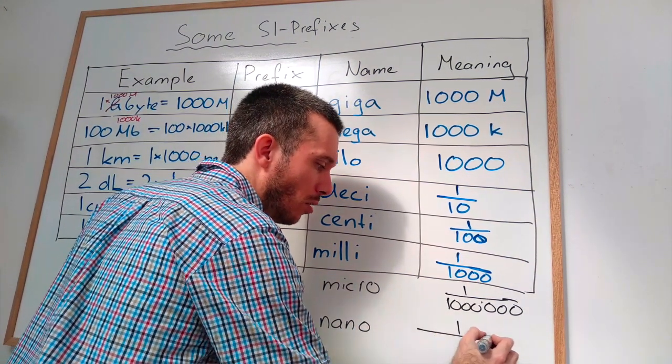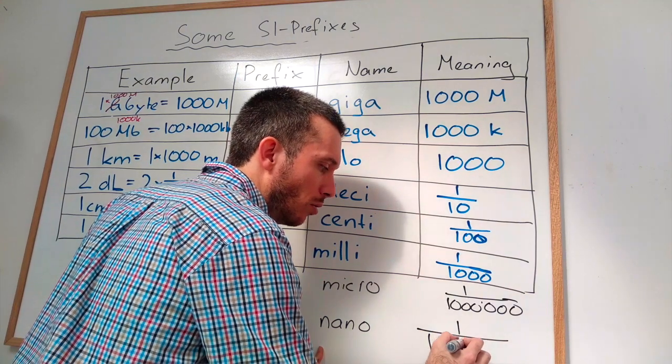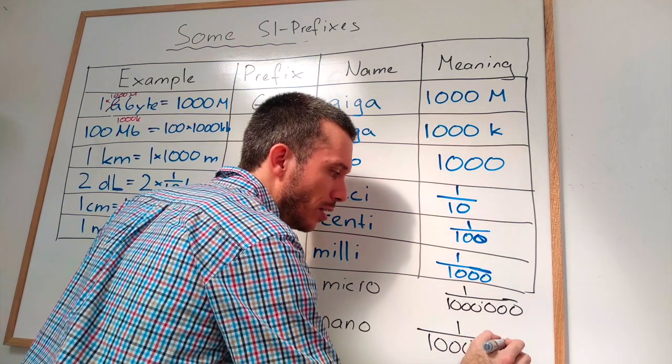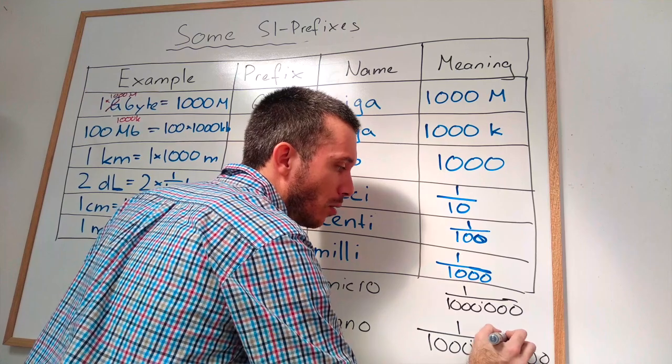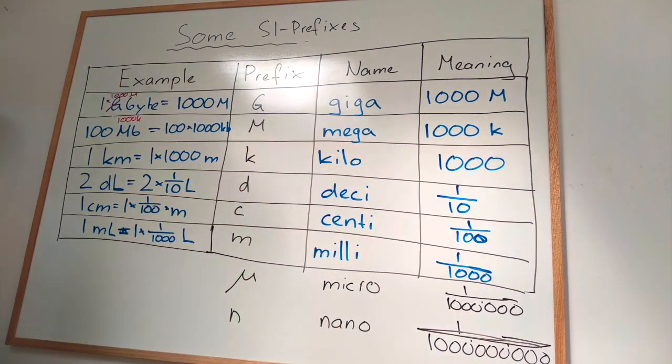So this is equal to one over one. One, two, three, four, five, six, seven, eight, nine. Nine zeros is the nano.